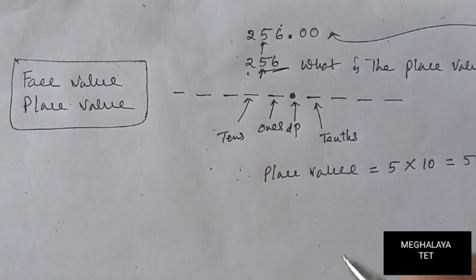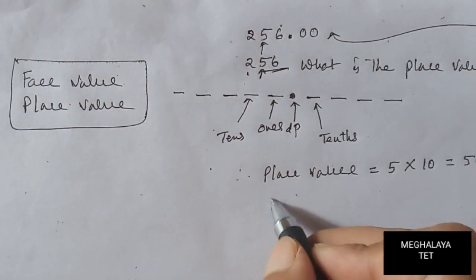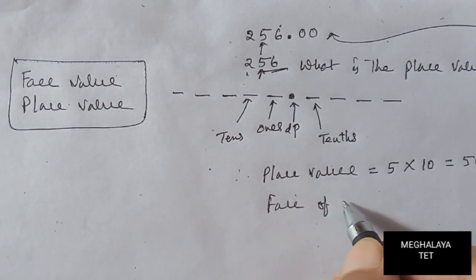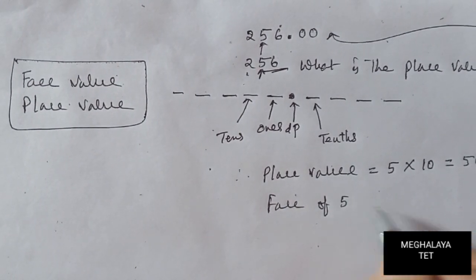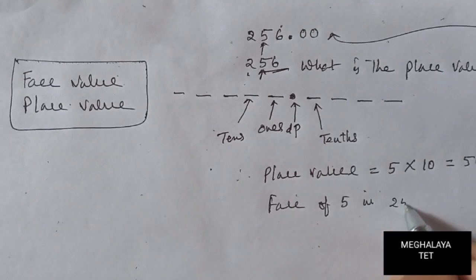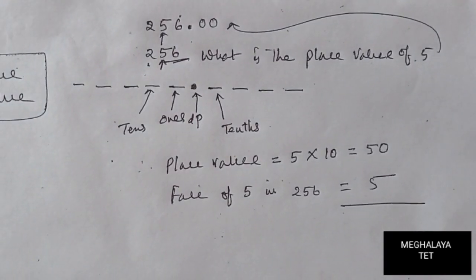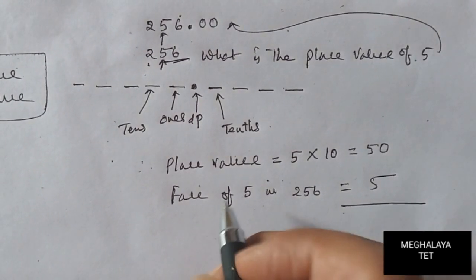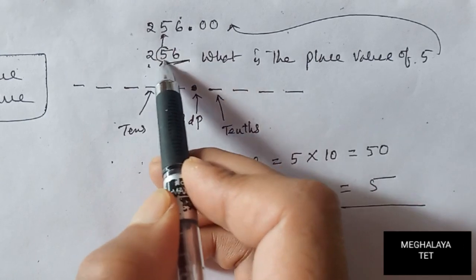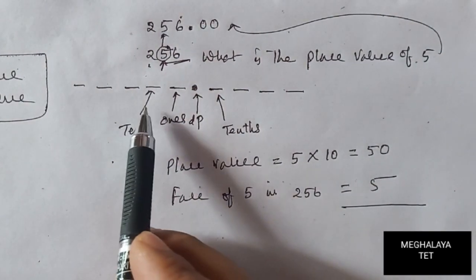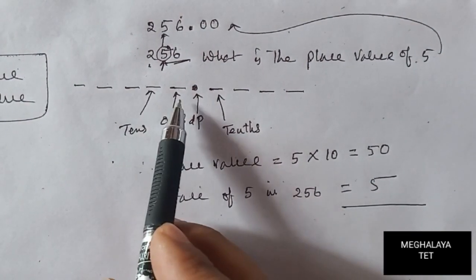And what is the face value of 5 in 256? Face value equals 5 only — just the digit itself. For face value, we just take the number as it is; nothing else to do.